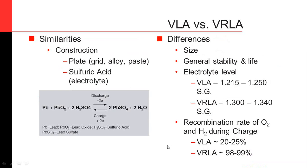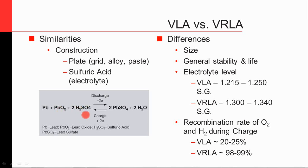Some similarities and differences: these are not necessarily all similarities or differences, nor is this intended to indicate what specific battery you need for your application. Both have similar construction with the plates being a grid base of some sort of lead alloy and a paste material. Both use sulfuric acid — lead is the negative plate, lead oxide is the positive plate. In the charged state you have sulfuric acid; in the discharge state both plates become lead sulfate and you get water.